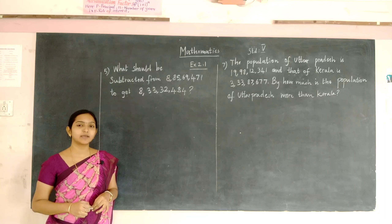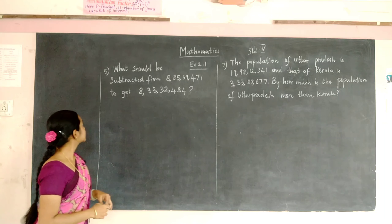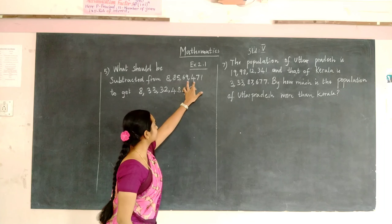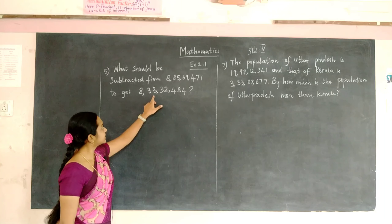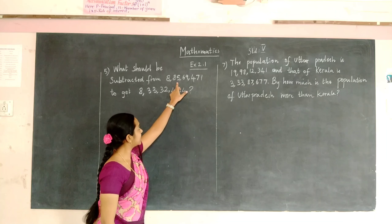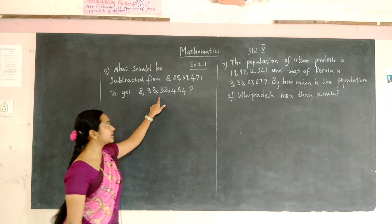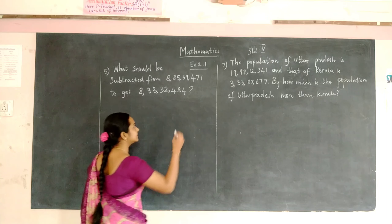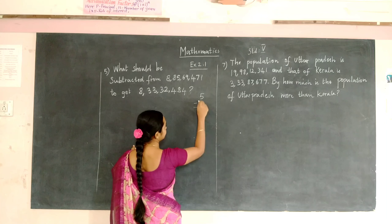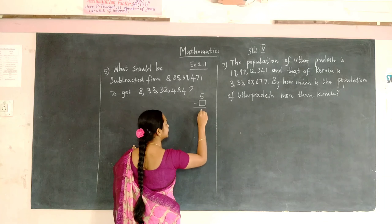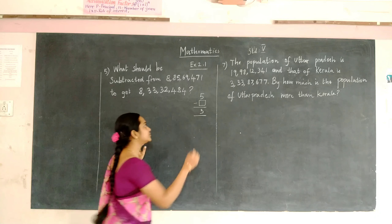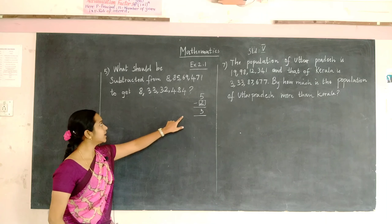Good morning students. We are going to solve remaining problems in Exercise 2.1. The fifth problem is: what should be subtracted from 8 crore 85 lakhs 69,471 to get 8 crore 33 lakhs 32,487? A number is subtracted from 8 crore 85 lakhs 69,471 to get this number — we have to find what number is subtracted.